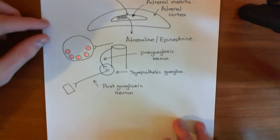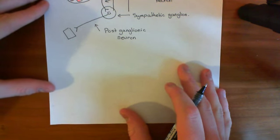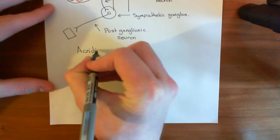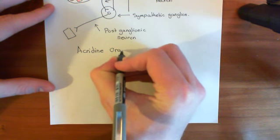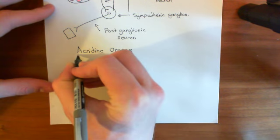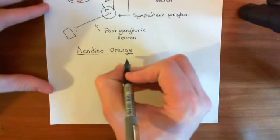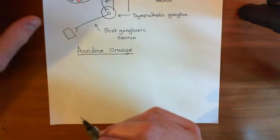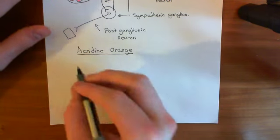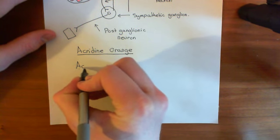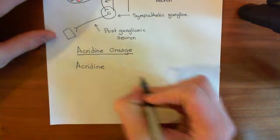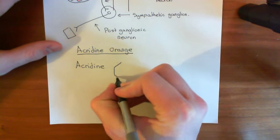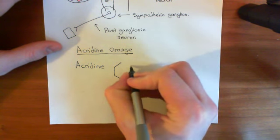First, let's discuss the dye we're going to use. The dye we're going to use to visualize the synaptic vesicles is a dye known as acridine orange. I want to discuss the structure of this dye because it's important for its chemical properties, and its chemical properties are important for understanding how it's going to be sequestered into these vesicles within the chromaffin cell. So let's start off with the structure of the chemical molecule known as acridine. Acridine is a rather beautiful chemical structure.